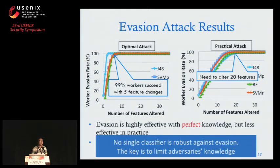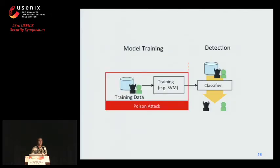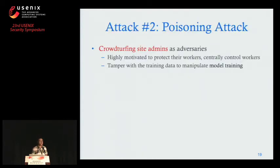The key insight is to limit adversaries' knowledge about your classifier. After evasion attack, we next look at poisoning attack. Poisoning attack happens during the training phase, and the adversaries are crowd-turfing administrators. Defenders take training data from their website, and administrators can tamper with that training data to protect their workers.